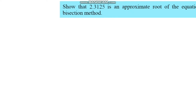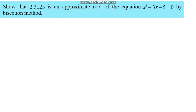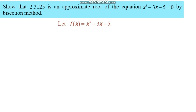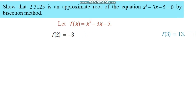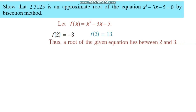Show that 2.3125 is an approximate root of the equation using the bisection method. The given equation is compared with f(x) = 0, where f(x) = x³ minus 5. We identify endpoints using the intermediate value theorem: f(2) = -3 and f(3) = 13. The product f(2)·f(3) is negative, so a root lies between 2 and 3.